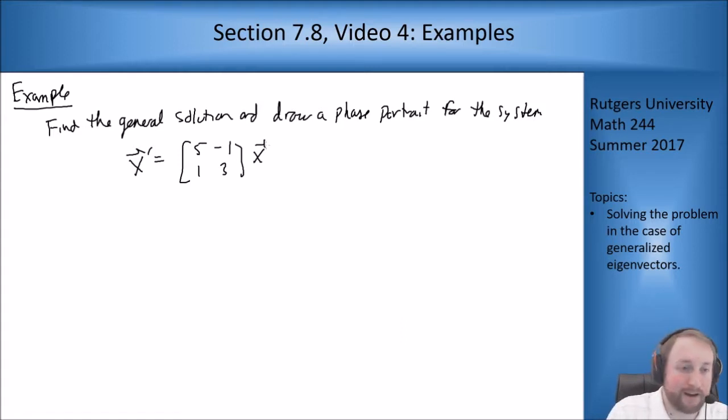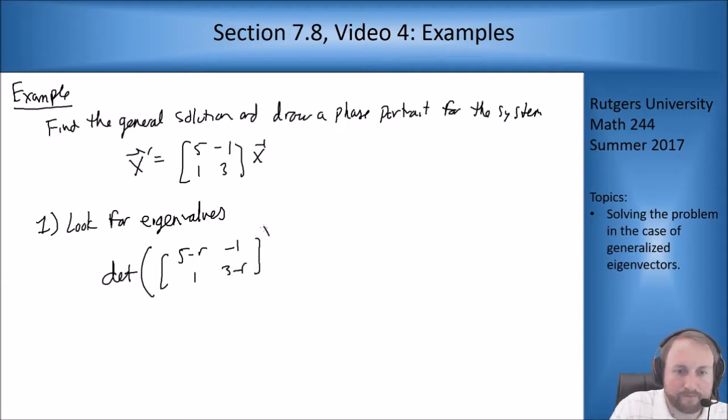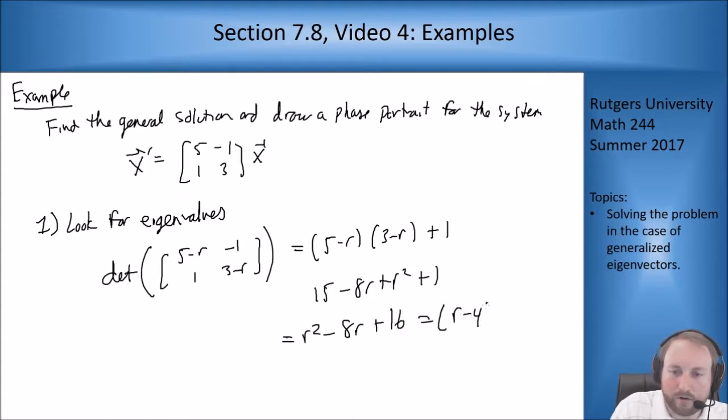Step one is look for eigenvalues. I do the determinant of 5-r, -1, 1, 3-r. This is (5-r)(3-r) + 1, which gives 15 - 8r + r² + 1. So I get r² - 8r + 16, which is (r-4)². We have a double root at r = 4.